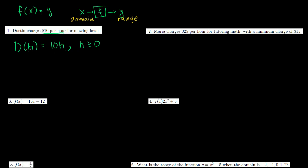If you ask how much he's going to charge for working half an hour, you put 1/2 in here, substituting h with 1/2. You do 10 times 1/2. So Dustin's going to charge for 1/2 hour: d(1/2) = 10 × 1/2, which is equal to $5.